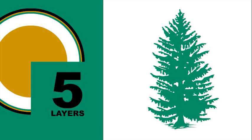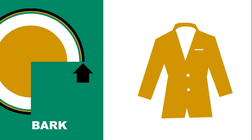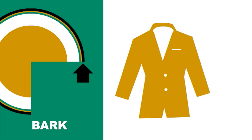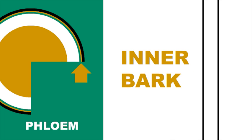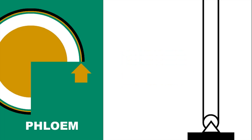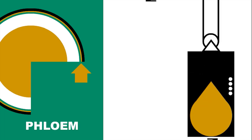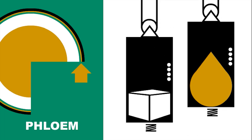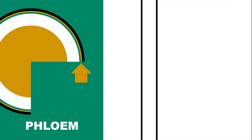A typical tree has five layers in its trunk. First, the bark — the bark is like a protective jacket for the tree. Under the bark is the phloem, also known as the inner bark. It transports sap and sugars from the needles and leaves to nourish the rest of the tree.